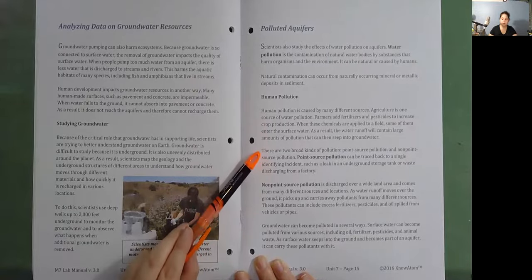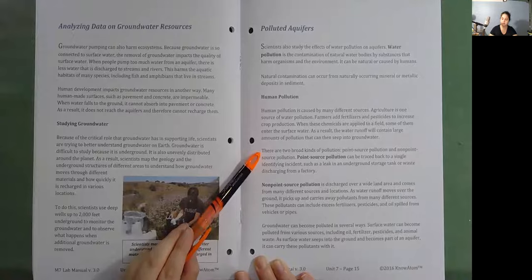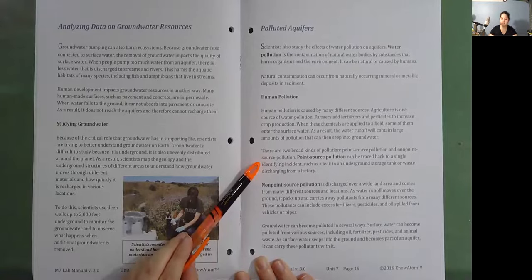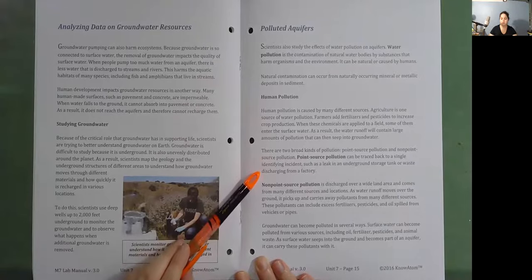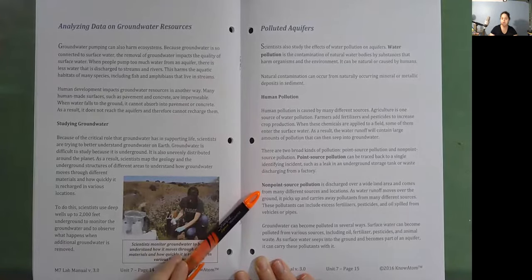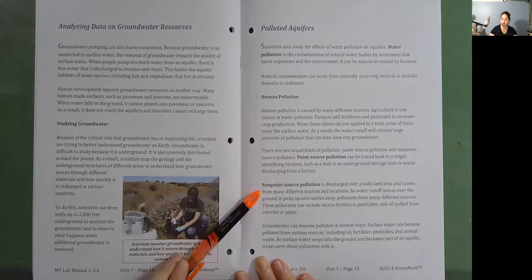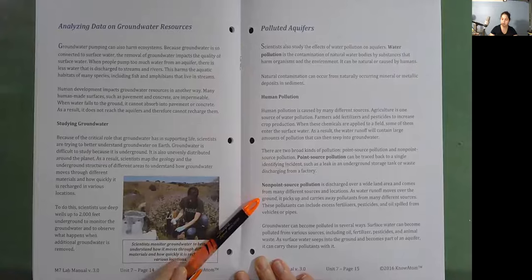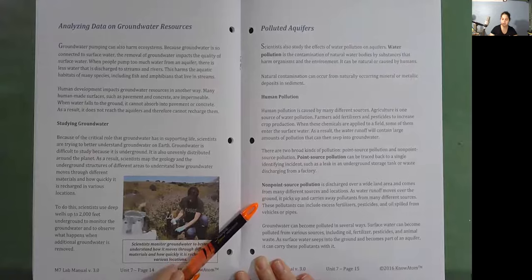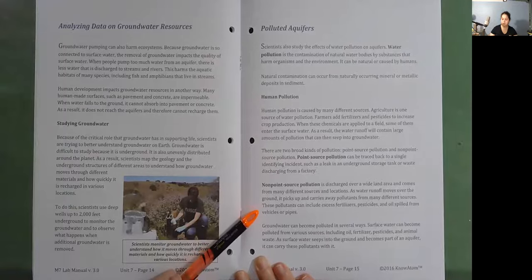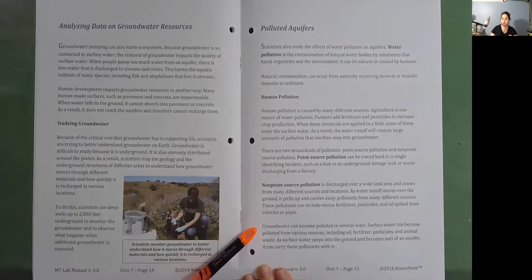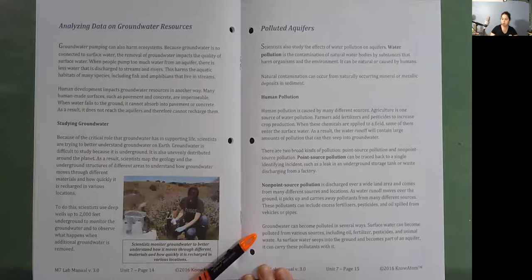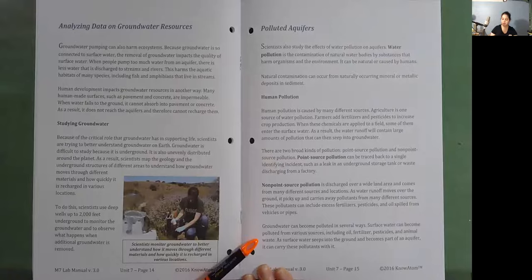There are two broad kinds of pollution, point source pollution and non-point source pollution. Point source pollution can be traced back to a single identifying incident, such as a leak in an underground storage tank or waste discharging from a factory. Non-point source pollution is discharged over a wide land area and comes from many different sources and locations. As water runoff moves over the ground, it picks up and carries away pollutants from many different sources. These pollutants can include excess fertilizers, pesticides, and oil spilled from vehicles or pipes. Groundwater can become polluted in several ways. Surface water can become polluted from various sources, including oil, fertilizer, pesticides, and animal waste. As surface water seeps into the ground and becomes part of an aquifer, it can carry these pollutants with it.